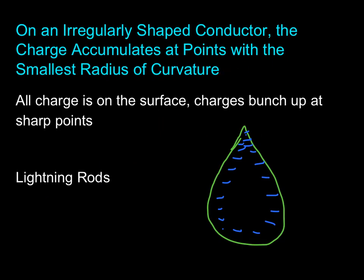So, our final rule is that if you have an irregularly shaped object, charge accumulates at the smallest radius of curvature. We would call these the sharp spots. So, if you look, all the charges on the surface, and we've got this little teardrop shape. Well, if all the charges on the surface, and they're moving away, you can see that your surface gets kind of clumped together right here. Now, we will verify this numerically when we start talking about potential, which is going to be in the next couple chapters.